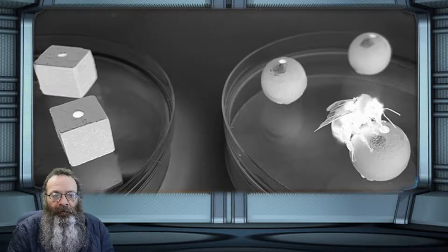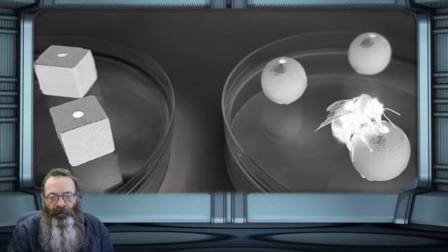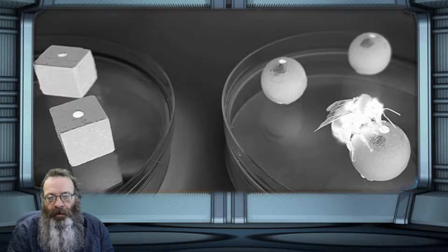In the light but barred from touching the objects, bumblebees were trained to find rewarding sugar water in one type of object, cubes or spheres, and bitter quinine solution in another shape.